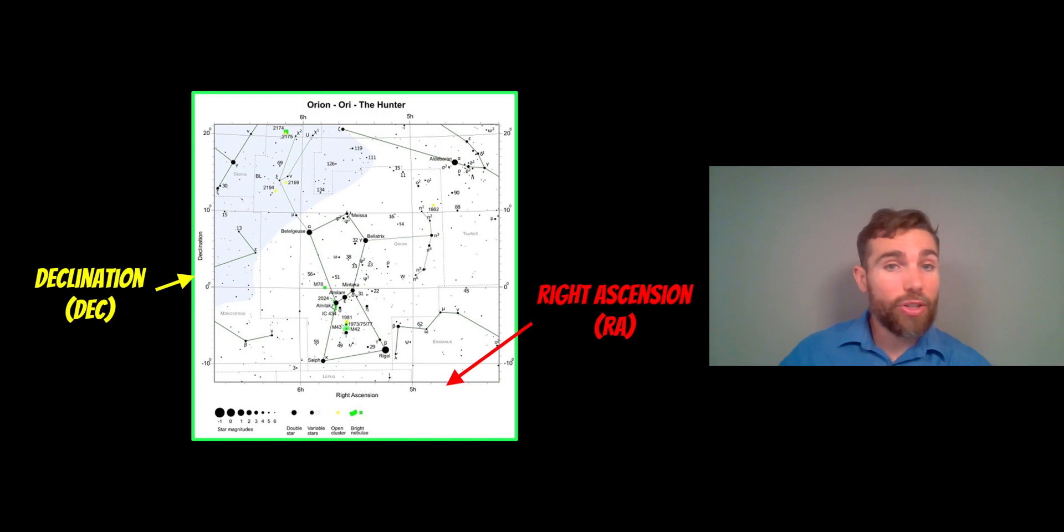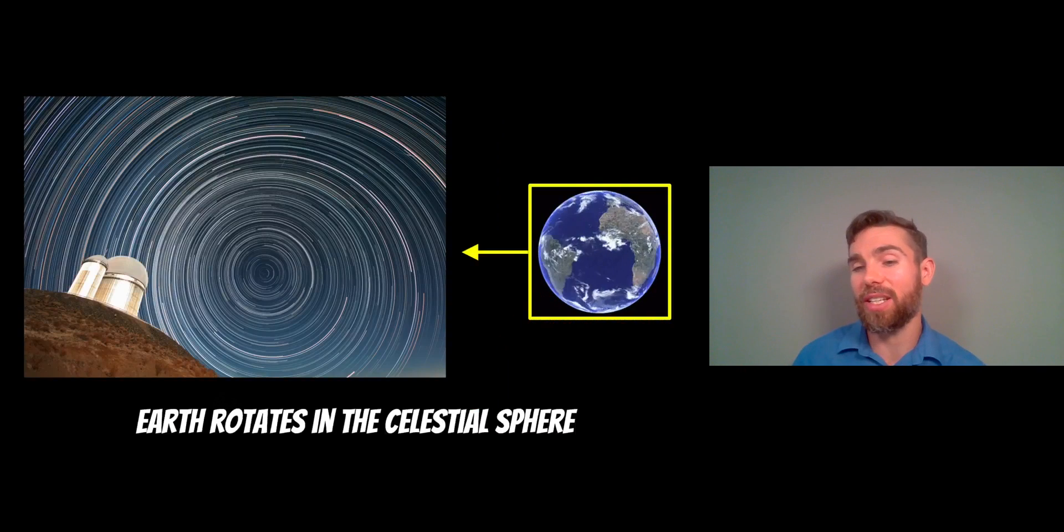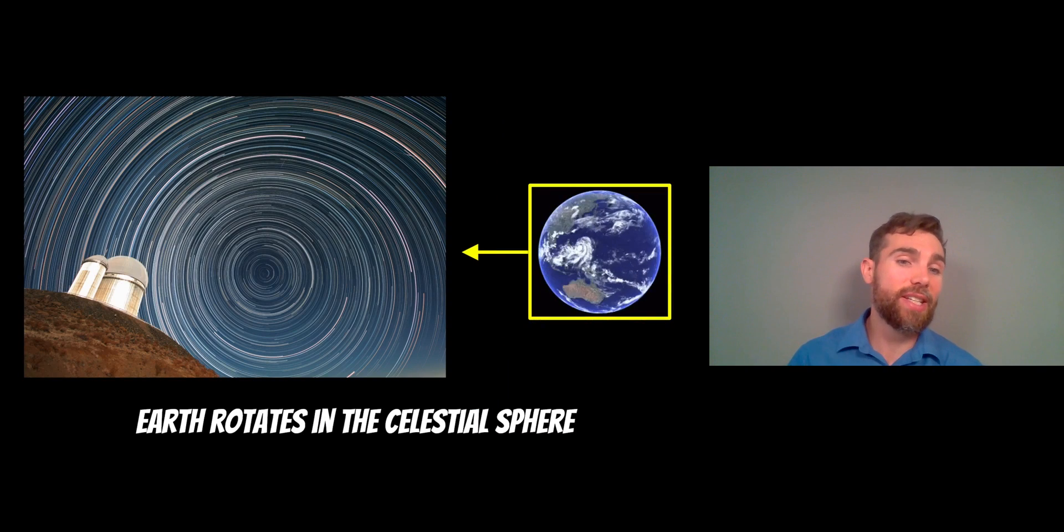So you may have seen star charts like this, so this is the Orion constellation, with stars, the nebula and things like that on, but you can see it's set out in declination and right ascension. Now those coordinates don't change regardless of how they appear in the sky. So as the Earth is rotating, the celestial sphere stays stationary, but the Earth rotates inside it.